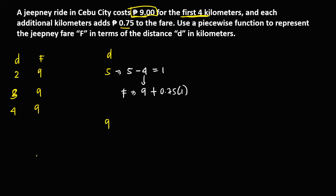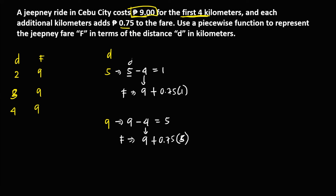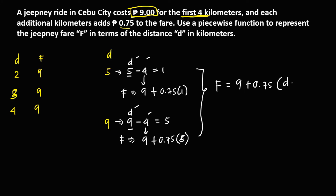If the distance is 9 kilometers, to solve for the total fare: 9 minus 4 equals 5. To compute the total fare, the first 4 kilometers is 9 pesos plus 0.75 for every additional kilometer. To formulate the formula, with D as the distance, the total fare equals 9 plus 0.75 times (D minus 4).